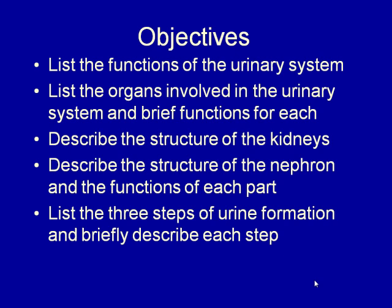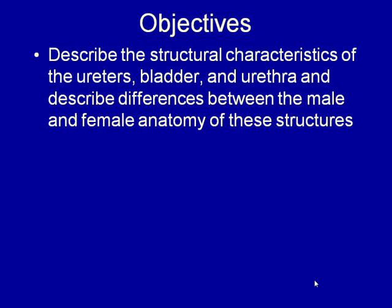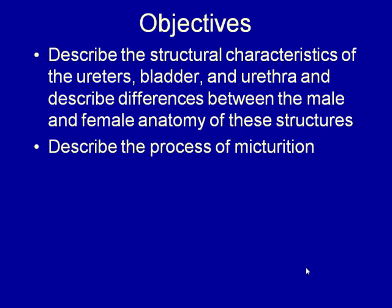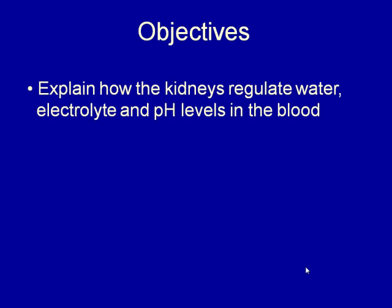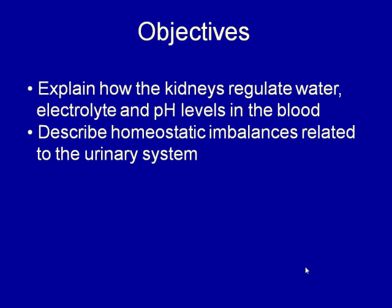You should be able to describe the structural characteristics of the ureters, bladder, and urethra, and describe differences between the male and female anatomy of these structures, describe the process of micturition, describe the characteristics of normal urine, list abnormal urine constituents, the name of the condition and possible causes of each, explain how the kidneys regulate water, electrolyte and pH levels in the blood, and describe homeostatic imbalances related to the urinary system.